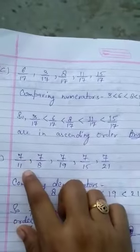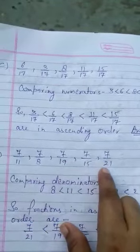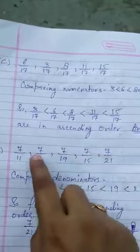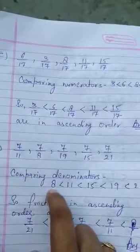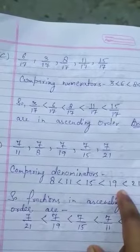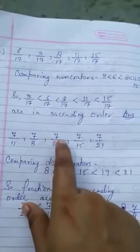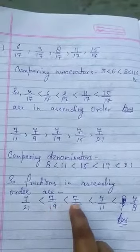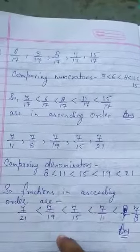Now question E: 7 upon 11, 7 upon 8, 7 upon 19, 7 upon 15, 7 upon 21. Here the numerator is the same, so we compare the denominators. Larger denominator means smaller fraction. So: 7 upon 21 is less than 7 upon 19 is less than 7 upon 15 is less than 7 upon 11 is less than 7 upon 8. These fractions are in ascending order.